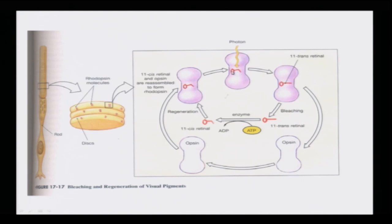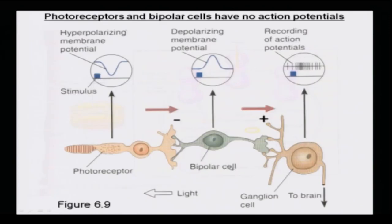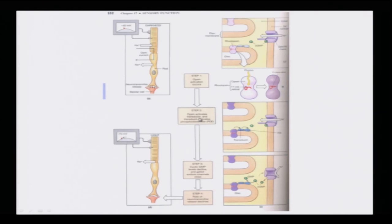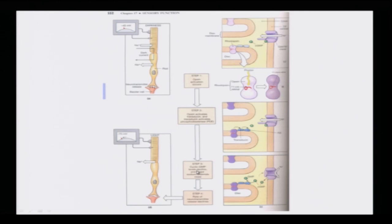When a photon arrives, eleven-cis retinal becomes eleven-trans retinal, and then eleven-trans retinal detaches from the opsin — this detachment is also called bleaching. Through an enzymatic process, eleven-trans retinal transforms back to eleven-cis retinal. In the meantime, the opsin activates a protein called transducin, and transducin activates phosphodiesterase. This phosphodiesterase removes the cyclic GMP gating of the sodium channel. The cyclic GMP level declines and the gated sodium channels close — this is Step Three, very important.